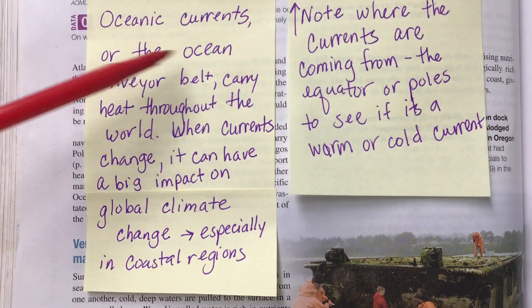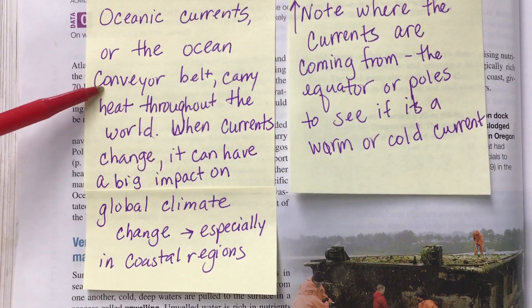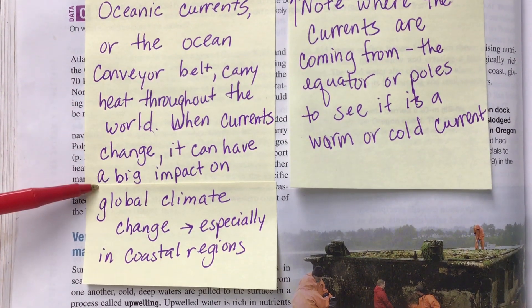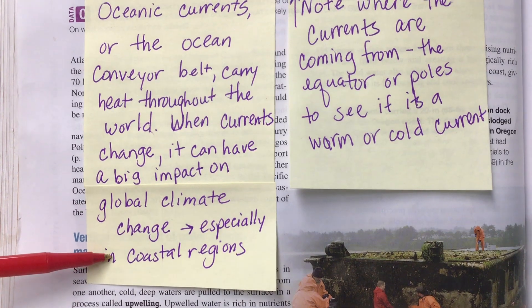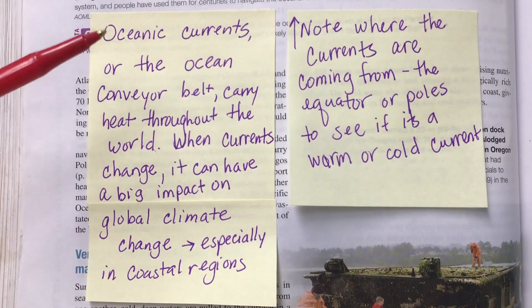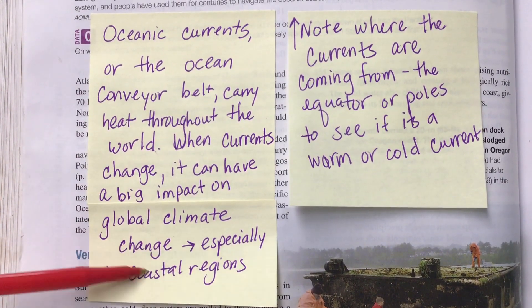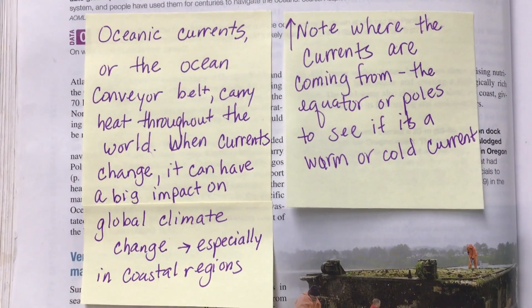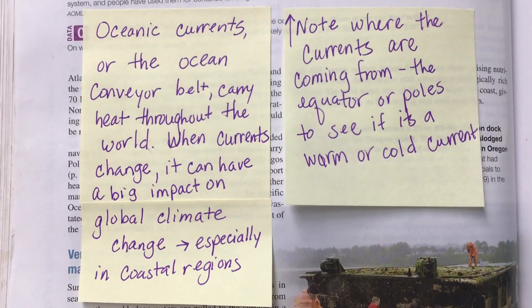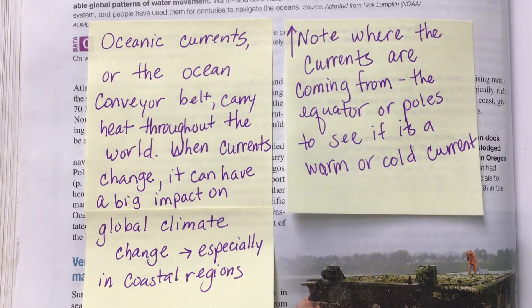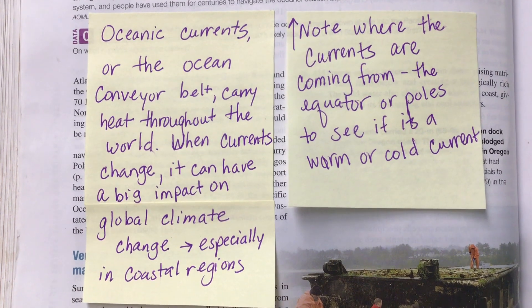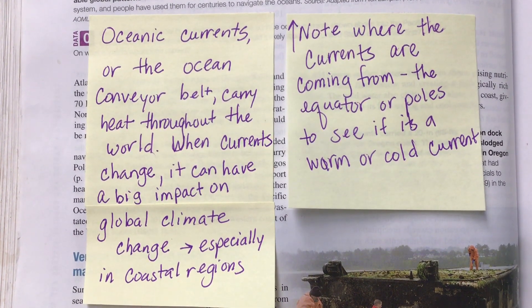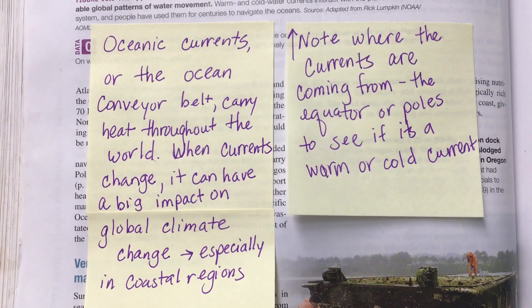Ocean currents — also called the ocean conveyor belt — carry heat throughout the world. When currents change, it can have a big impact on global climate change, especially in coastal regions. So if the water warms up off the coast of California, our coastal communities are going to feel warmer. We always talk about global warming, but in some locations it's going to be a little bit colder too, because some of the currents will change. We will study more about that in chapter 18.